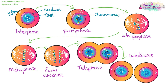In mitosis, we go from one parent cell to two identical daughter cells. The first thing that needs to happen is that the DNA in the nucleus needs to condense into chromosomes, and then they need to line up down the middle. Once they're all lined up and all the checks are taking place, they can start to be pulled apart to either end of the cell. New nuclei will form and then they will separate into two identical daughter cells.